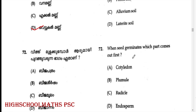When a seed germinates, which part comes first? The part that comes out first during germination is the Beeja Moolam. Answer: Option C — Radicle.